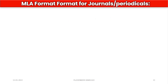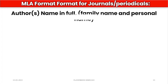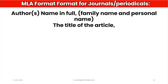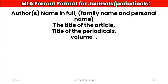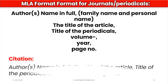Now let's come to the citation with respect to journals and periodicals. In this format we are going to write the author's name in full — if possible we can take the surname, also called the family name, and personal name. The second step is to write the title of the article, followed by the title of the periodical. Next, mention the volume in which it was published, then the year of publication, and then the page numbers in which the article is printed. This format can be written in a single line as: author's name in full, title of the article, title of the periodical, volume, year, page number.